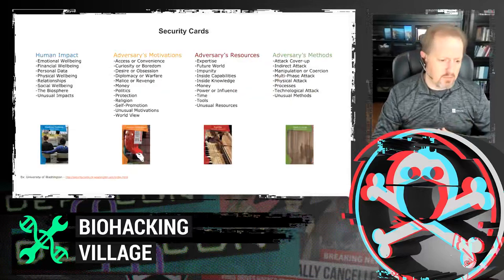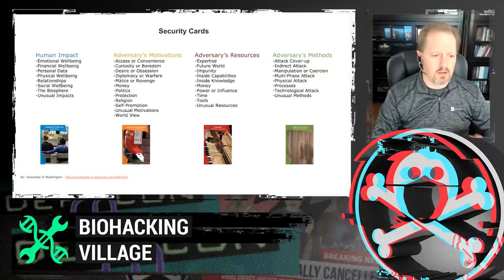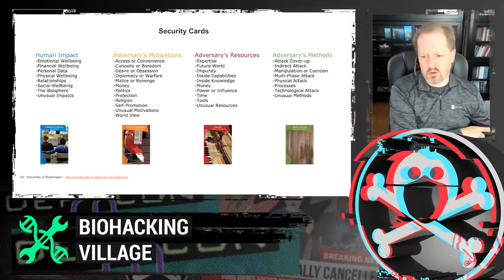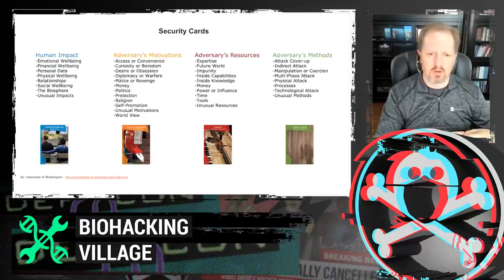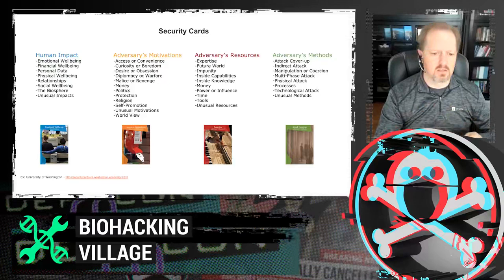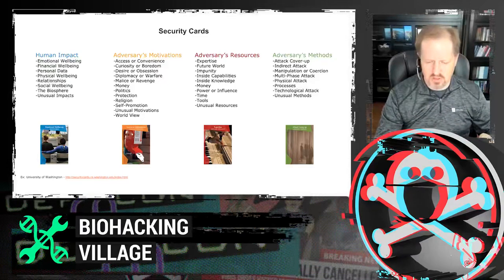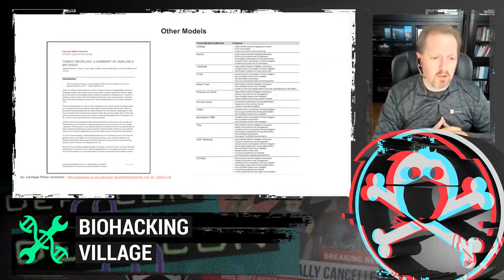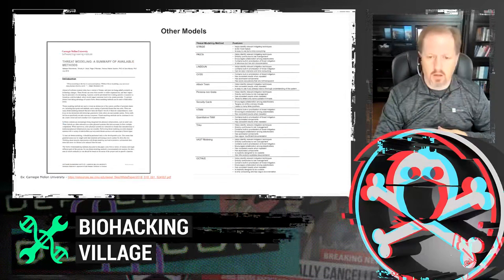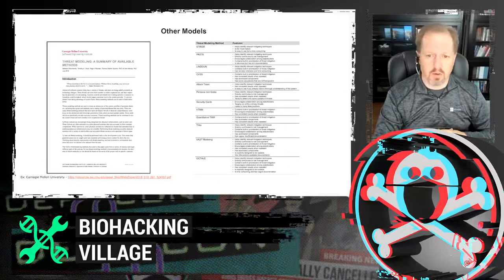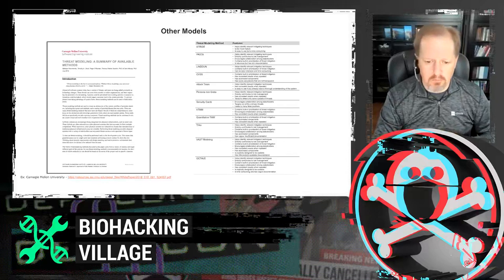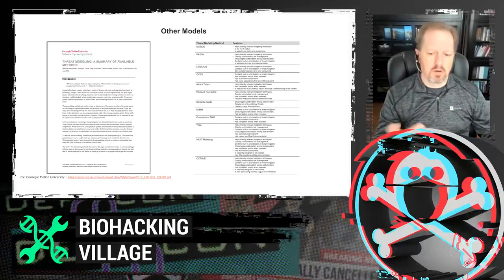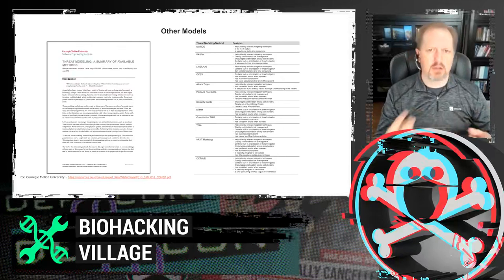Security Cards came out of the University of Washington — a way of training threat modelers, literally a deck of cards covering motivations, resources, and methods. There are also many other models, including a white paper from Carnegie Mellon on threat modeling, and the PASTA model. But none of them really fit what Patrick and I wanted to do — a single approach that could look at our software applications, vendors, and business processes and deal with all the intersections between compliance, security, and privacy to ultimately reduce our organization's risk.